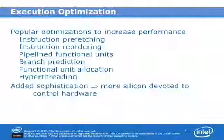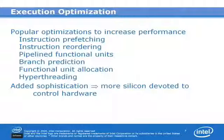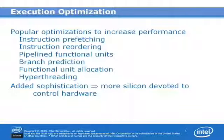There are several other ways besides parallelism to optimize performance. Instruction prefetching fetches the next instruction before it's needed. Instruction reordering puts instructions in a different order than written — if operands are available, those instructions execute while others wait. Pipelining functional units allows multiple instructions to be in flight simultaneously. Branch prediction prefetches instructions along one path of a conditional expression — if it guesses correctly, you're ahead; if not, you redo it. Multiple functional units allow integer operations, memory allocation, and floating-point operations to occur simultaneously.